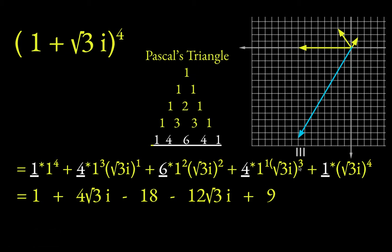Let's see, i cubed, that's going to be minus i. And then this is going to give you 3 root 3. So 4 times 3 root 3 is 12 root 3 times minus i. And then this term would give you a, i to the fourth is just positive 1, and root 3 to the fourth is 9. And so you have this.